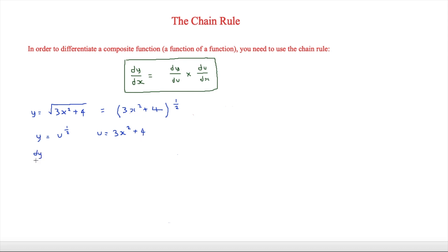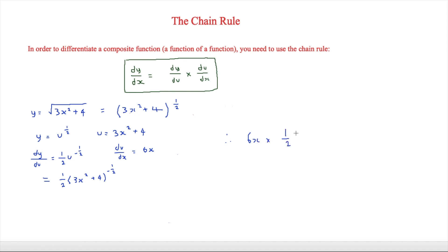We need to find dy over du, which equals one half times u to the minus half. Substituting u back in, that is one half times (3x squared plus 4) to the minus half. For du over dx, the 4 is a constant so it disappears, giving us 6x. So multiplying them together: 6x times one half times (3x squared plus 4) to the minus half.